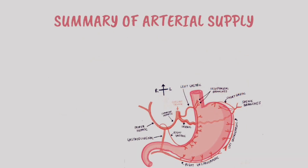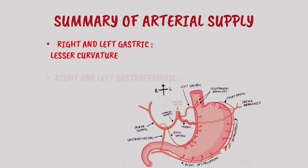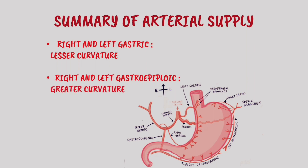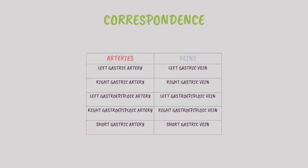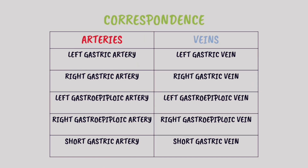So the arterial supply of the stomach can be summarized as: right and left gastric arteries supplying the lesser curvature, right and left gastroepiploic arteries supplying the greater curvature, and short gastric arteries supplying the fundus.